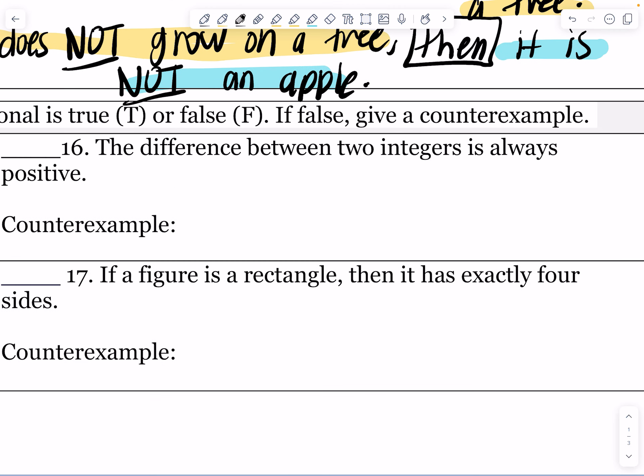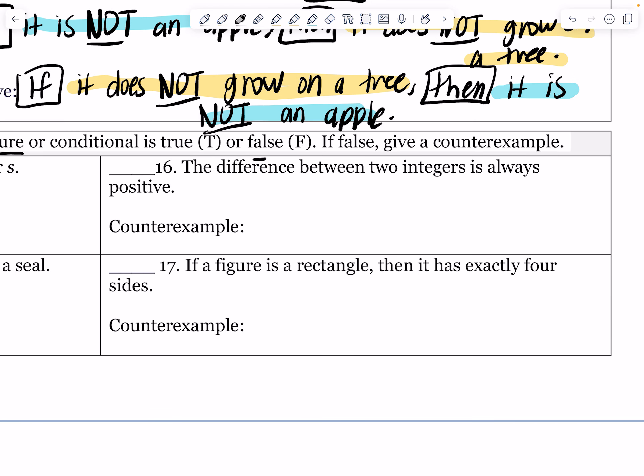Problem 16: The difference (remember the word difference means to subtract) between two integers is always positive. Some examples might be like 6 minus 2 equals 4, that is true. But what if we reversed it and did 2 minus 6? Well, 2 minus 6 is negative 4, and so that word 'always' fails this example. That's a counterexample, so this is false.